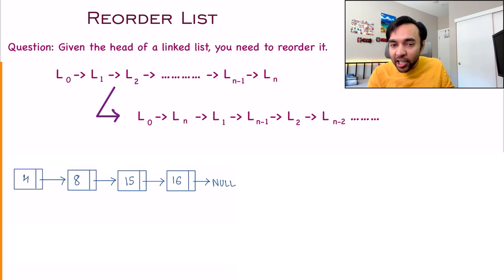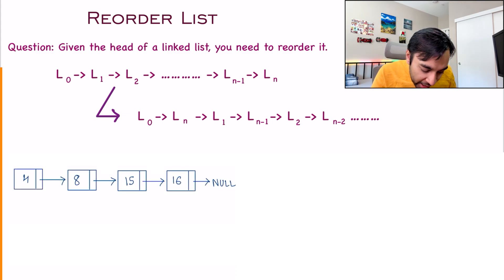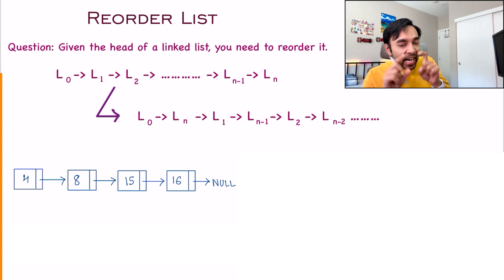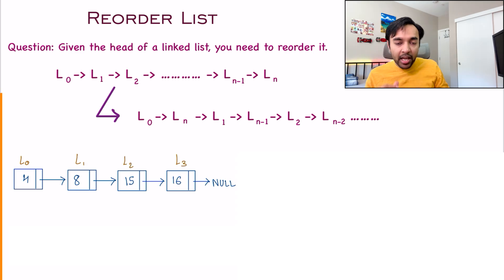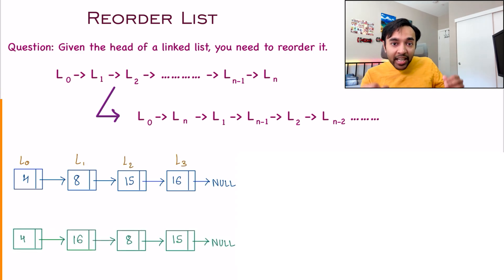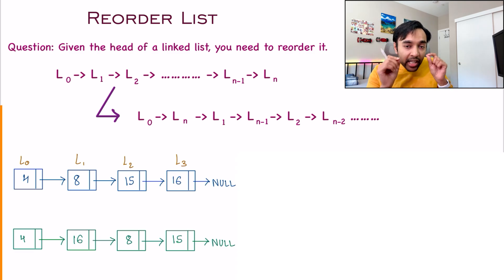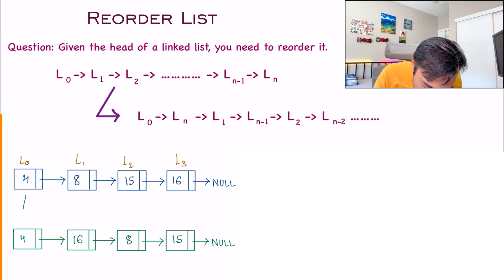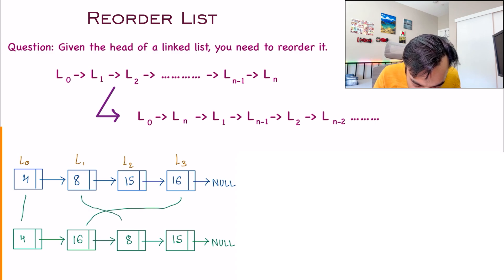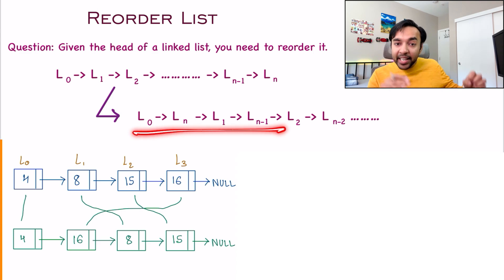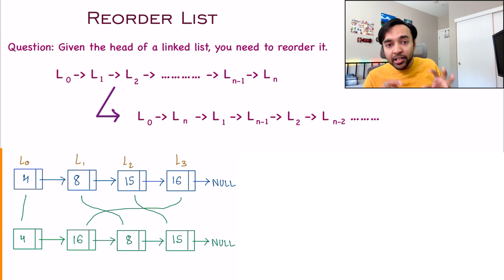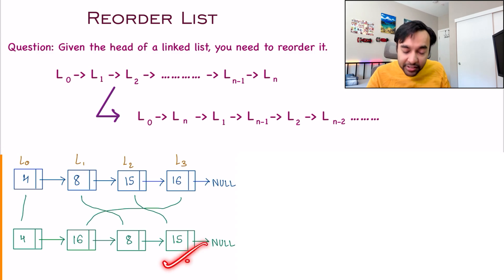Let us look at some sample test cases. For the first test case, I have 4 elements. Let me quickly relabel all of these elements. For this test case, this resultant list is your answer. I have the first element, then the last element, then the second element, and then the second last element. This was the case when you had an even number of elements — this is your expected answer.